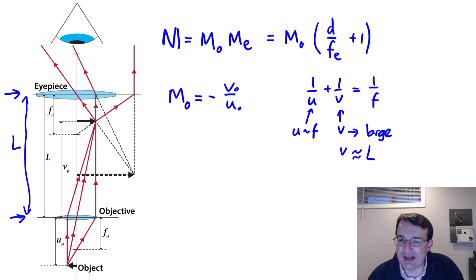The approximation we make is that v is approximately equal to the tube length and u is approximately equal to the focal length of the objective lens. So our magnification factor for the objective lens is minus L divided by fo. We put that all together and we get a magnification factor equal to minus L over fo times d over fe plus one. That's the magnification factor for our simple compound microscope.